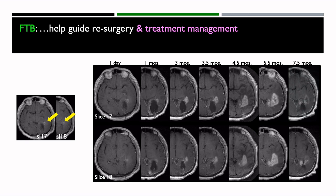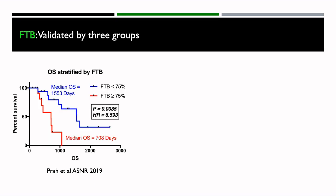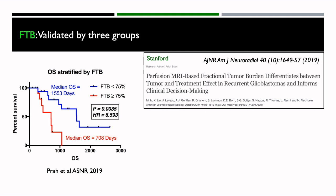Looking at the numbers — a Kaplan-Meier survival curve showing overall survival — we see that if the fractional tumor burden is greater than or less than 75% of the entire enhancing lesion, there's a clear difference in overall survival that's predicted. Fractional tumor burden has also been evaluated in a study performed at Stanford that showed it was very informative in terms of clinical decision-making.